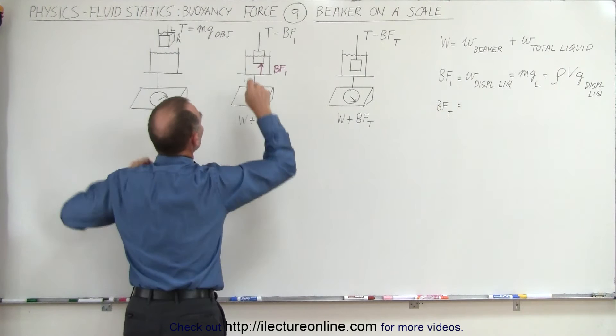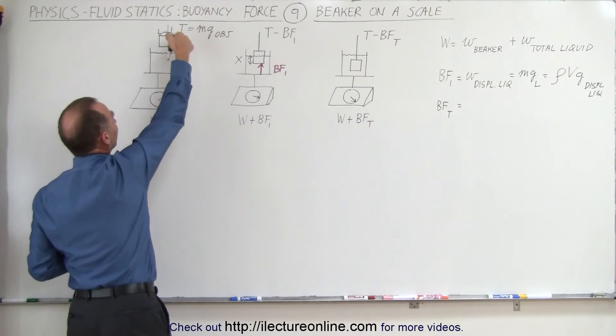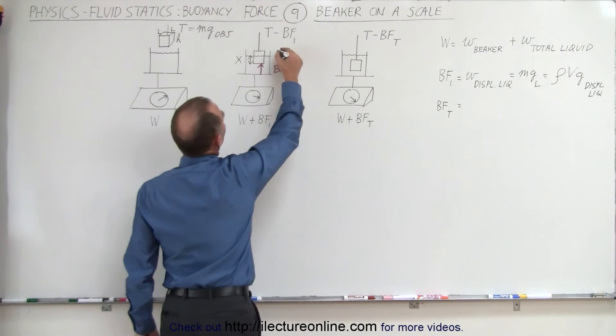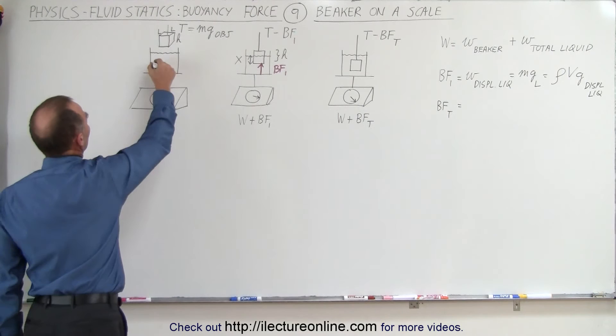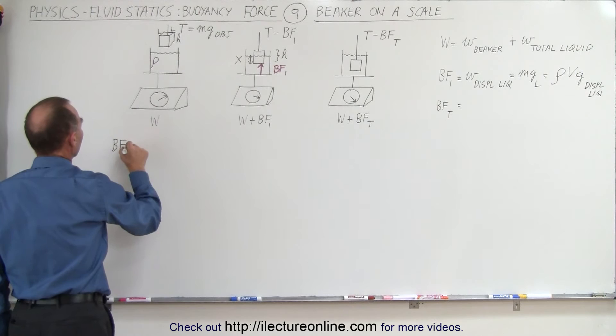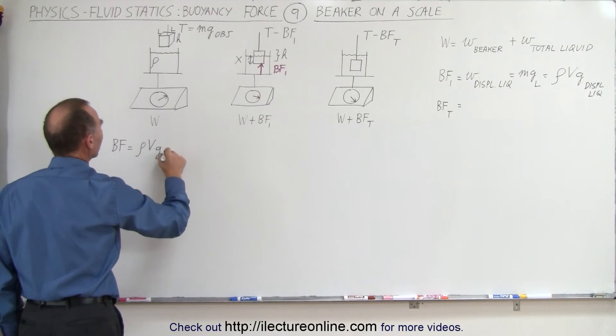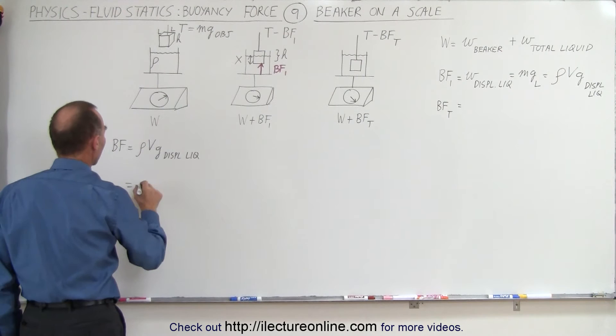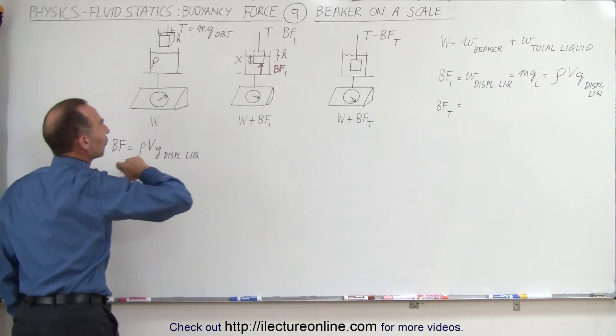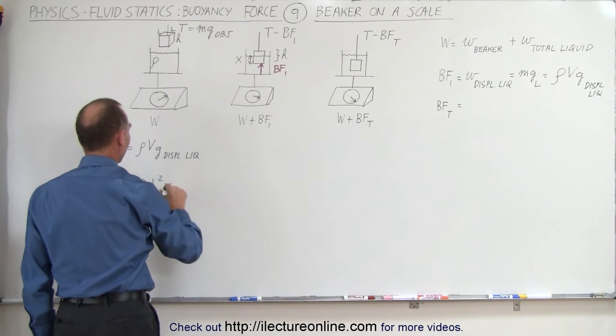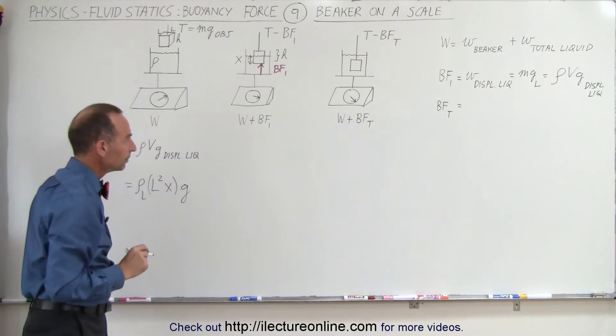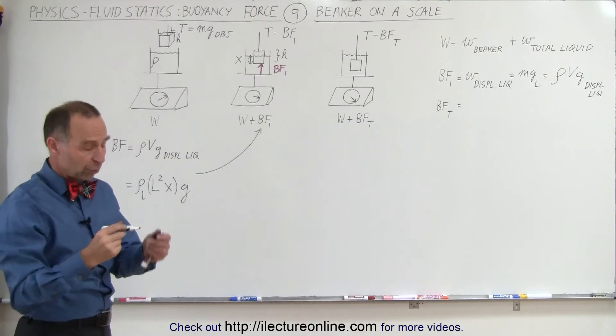Let's find out what that also equals in terms of the geometry. The distance down into the liquid is equal to x, and the height of the cube is equal to h. The amount suspended in the liquid is x, and the density of the liquid is rho. The buoyancy force equals the weight of the displaced liquid, which is rho times v times g. This equals the density of the liquid times the cross-sectional area L squared times x — the volume submerged — times g. That is buoyancy force 1.